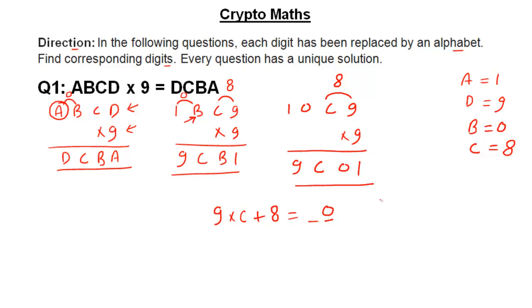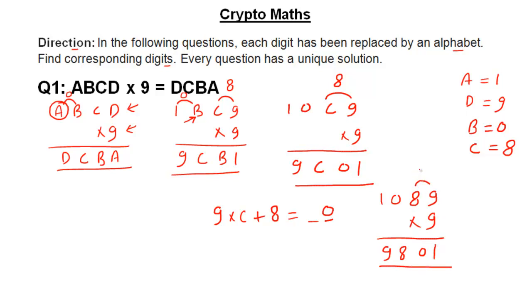The question is now solved. So 1089 multiplied by 9 is giving 9801. We can check it: 9 times 9 is 81, carry is 8; then 9 times 8 is 72, plus 8 is 80, carry is 8; then we get 8 and 9. This is correct, and this is the solution.